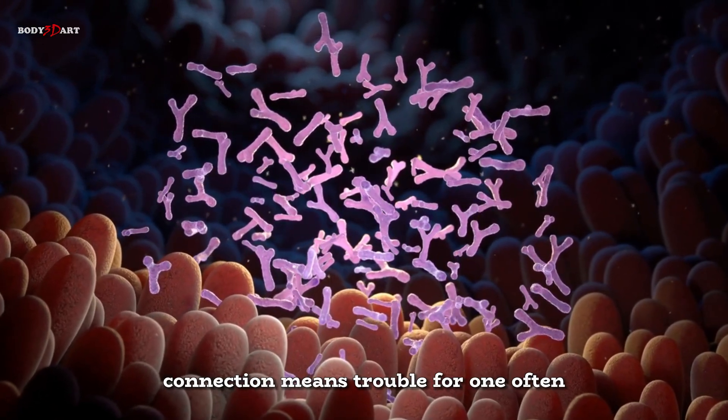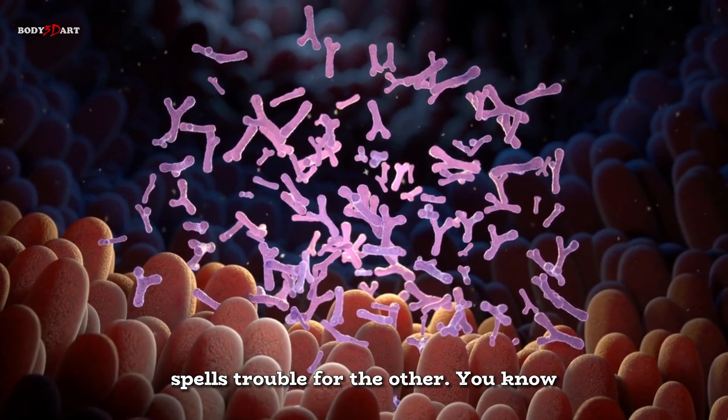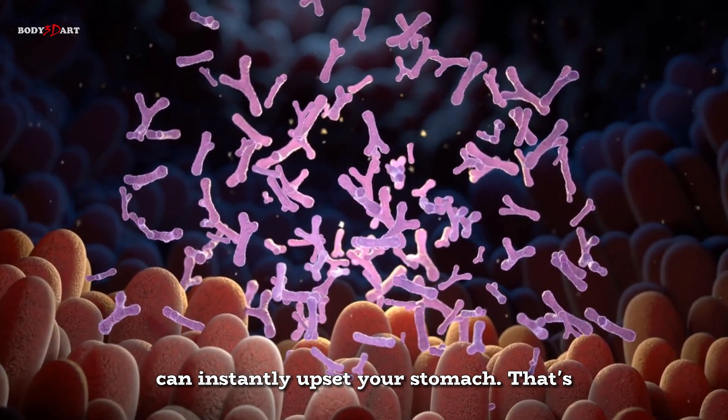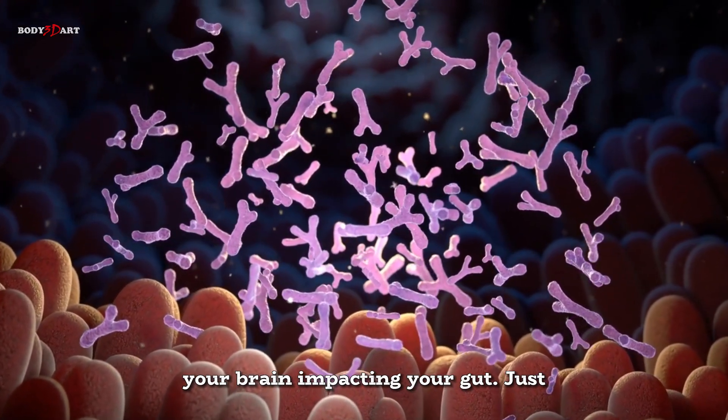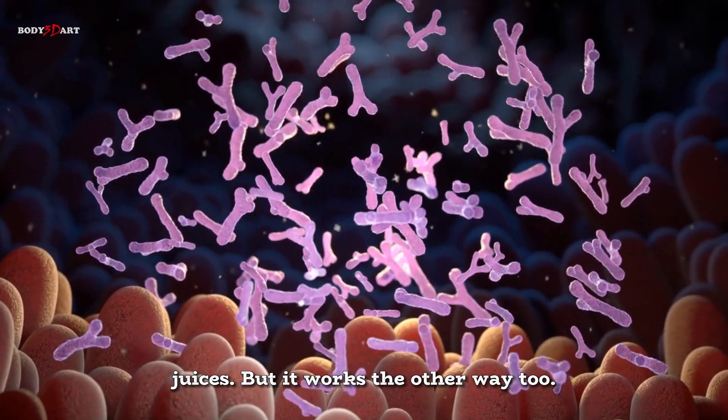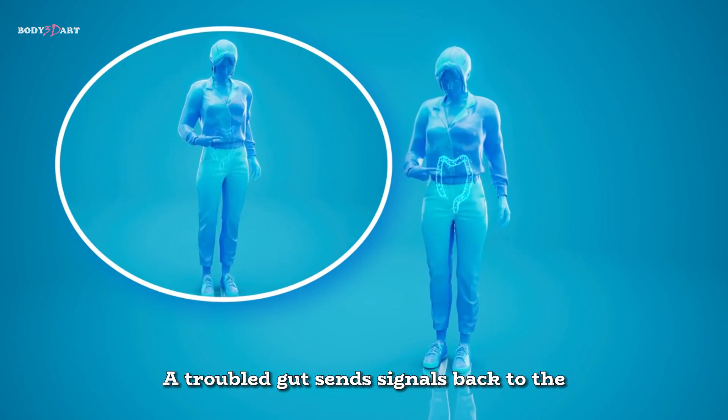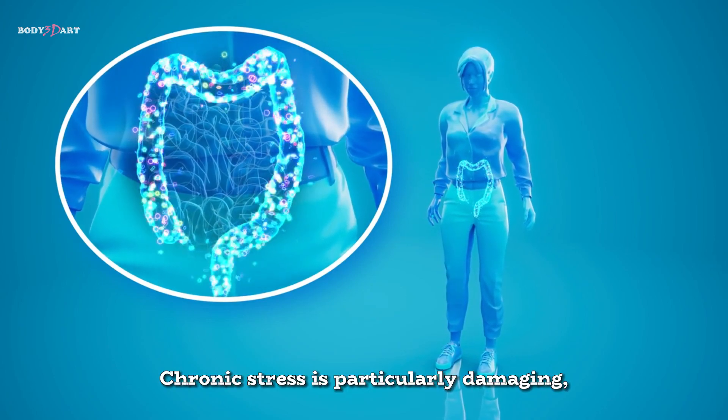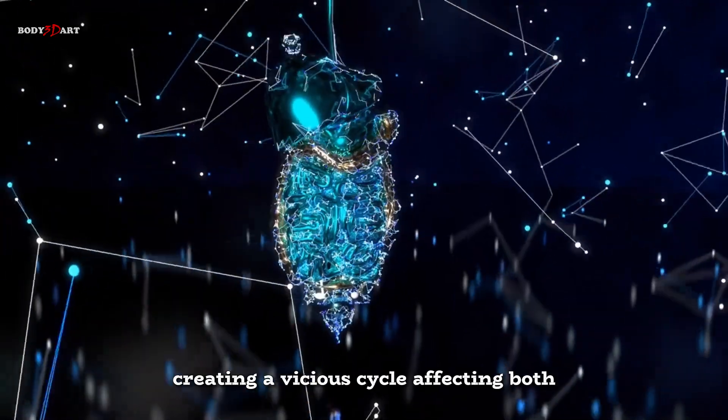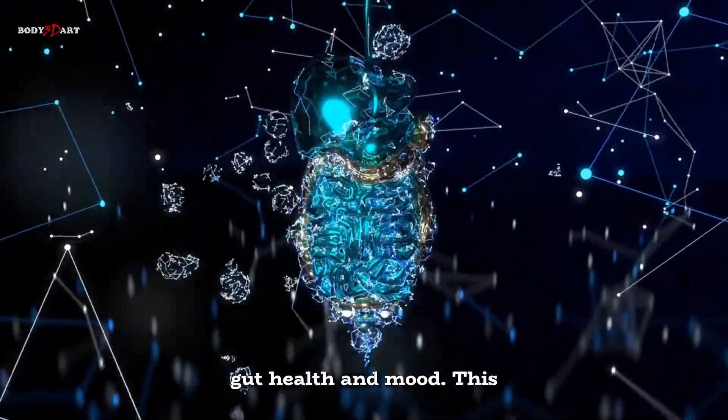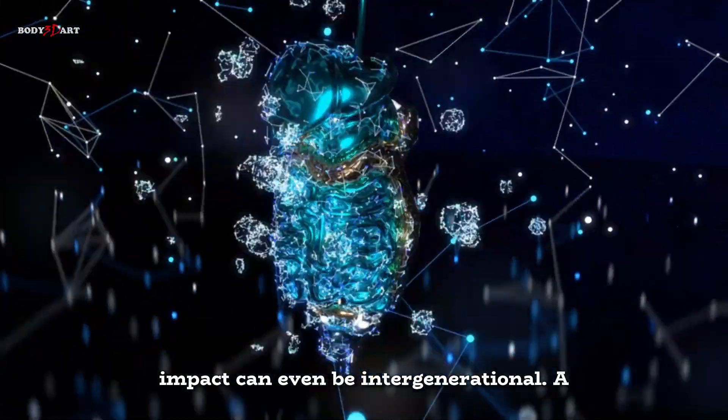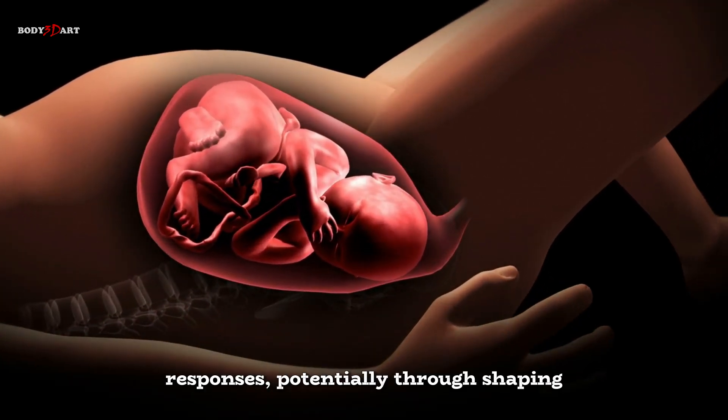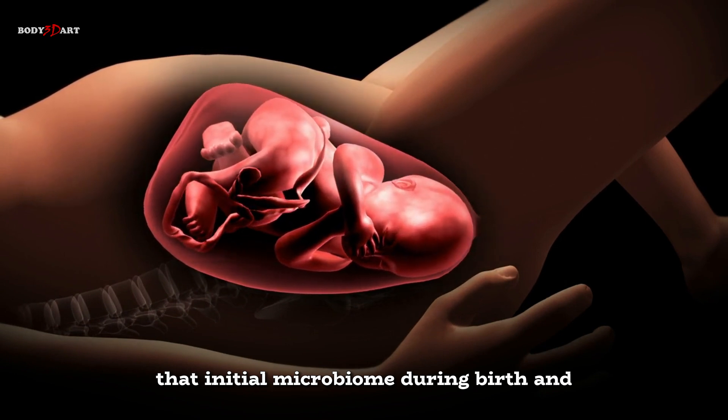This intricate gut-brain connection means trouble for one often spells trouble for the other. You know how stress, anger, anxiety, sadness can instantly upset your stomach? That's your brain impacting your gut. Just thinking about food releases stomach juices. But it works the other way, too. A troubled gut sends signals back to the brain that can trigger mood changes. Chronic stress is particularly damaging, disrupting your microbiome balance and creating a vicious cycle affecting both gut health and mood. This impact can even be intergenerational. A mother's stress during pregnancy might influence her child's future stress responses, potentially through shaping that initial microbiome during birth and infancy.